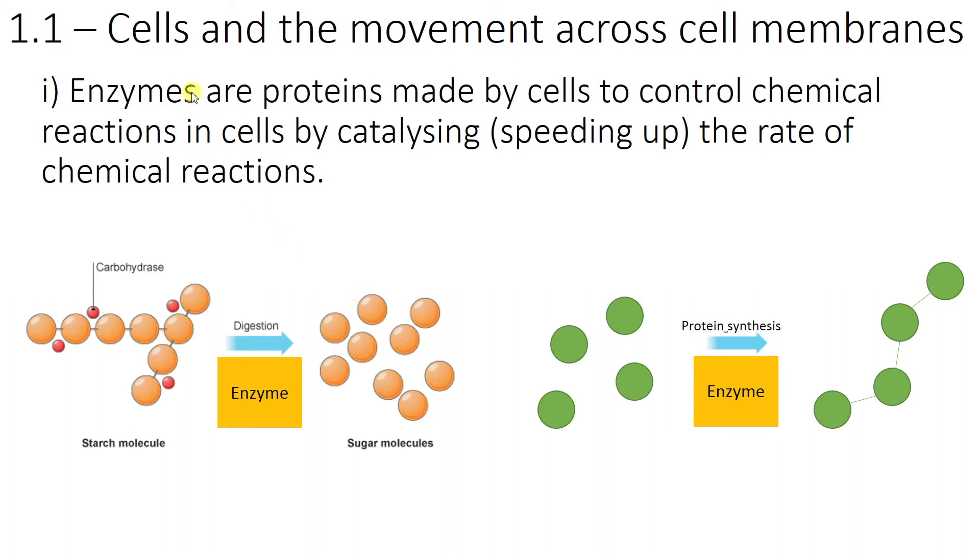So the first thing you need to know is that enzymes are proteins made by cells to control reactions in cells by catalyzing, which means speeding up, the rate of chemical reactions. This is a really important statement to remember, especially this word catalyzing. It just means speeding up. So what they do is they act as a kind of mediator for chemical reactions to occur.